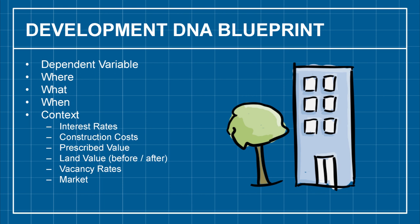The development DNA blueprint: development is the dependent variable — the where, what, and when. In addition, I can determine the context around that development: geographic distance, interest rates, construction costs, prescribed value, land value before and after construction, vacancy rates, market forces, and what other developments have taken place nearby. This is really the blueprint for the whole project — think of a map across the GTA with a dot representing each development.